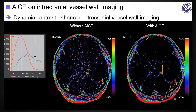On the same image dataset, we also applied a permeability process using the extended TOFTS method and obtained K-trans images. On K-trans images without AICE, noise from brain parenchyma disturbs recognition of vessel wall permeability. However, by applying AICE denoising, we can easily recognize the increased permeability of the arterial wall at the site of the MCA stenosis.